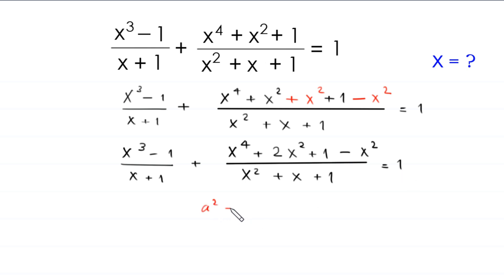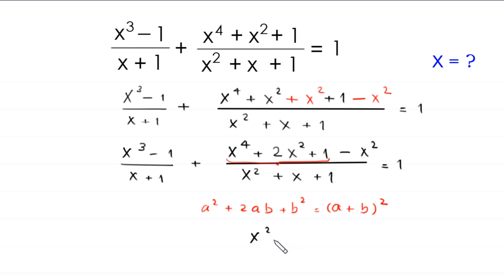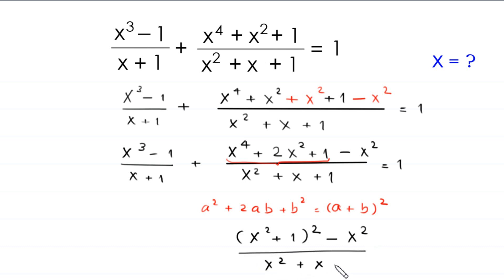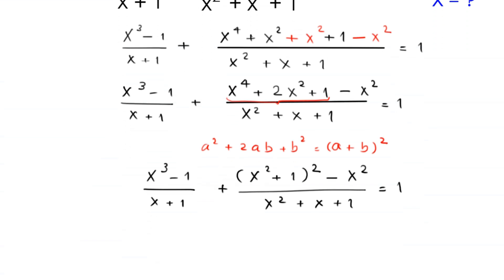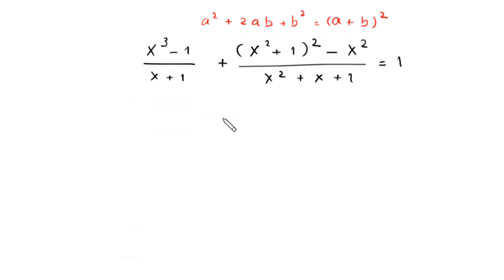Now by using the algebraic identity a² + 2ab + b² = (a + b)², this x⁴ + 2x² + 1 will become (x² + 1)², minus x², divided by x² + x + 1, plus (x³ - 1) divided by x² + x + 1, equals 1.